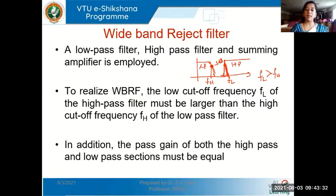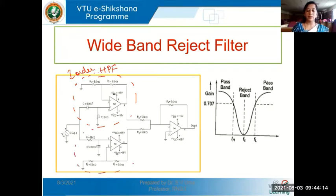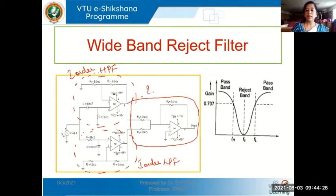In addition, the pass band gain of both high pass and low pass sections should be equal. If the pass band gain is 4 dB for the low pass, it should be the same 4 dB for the high pass also. Only then will we get the correct band reject response. Let's look at the circuit diagram of a wide band reject filter. We have a first order high pass filter and a first order low pass filter, and the last stage is an inverting adder circuit.